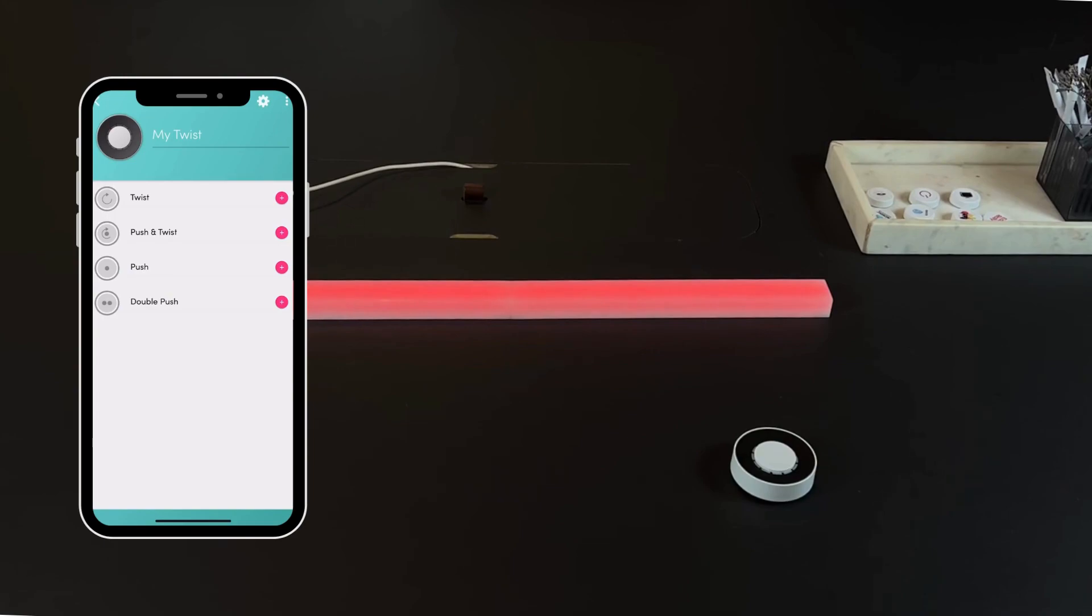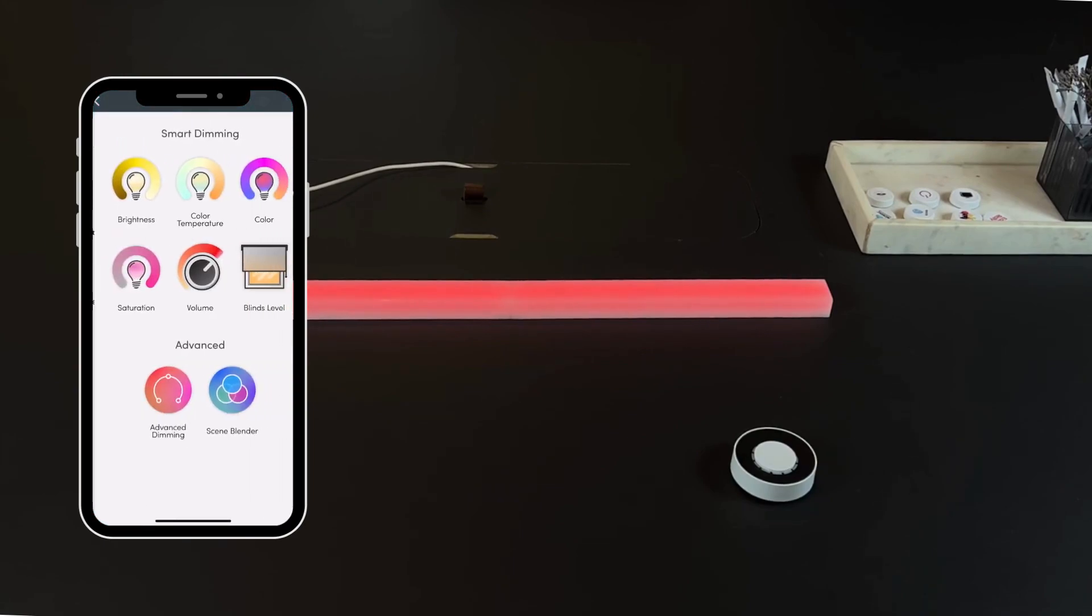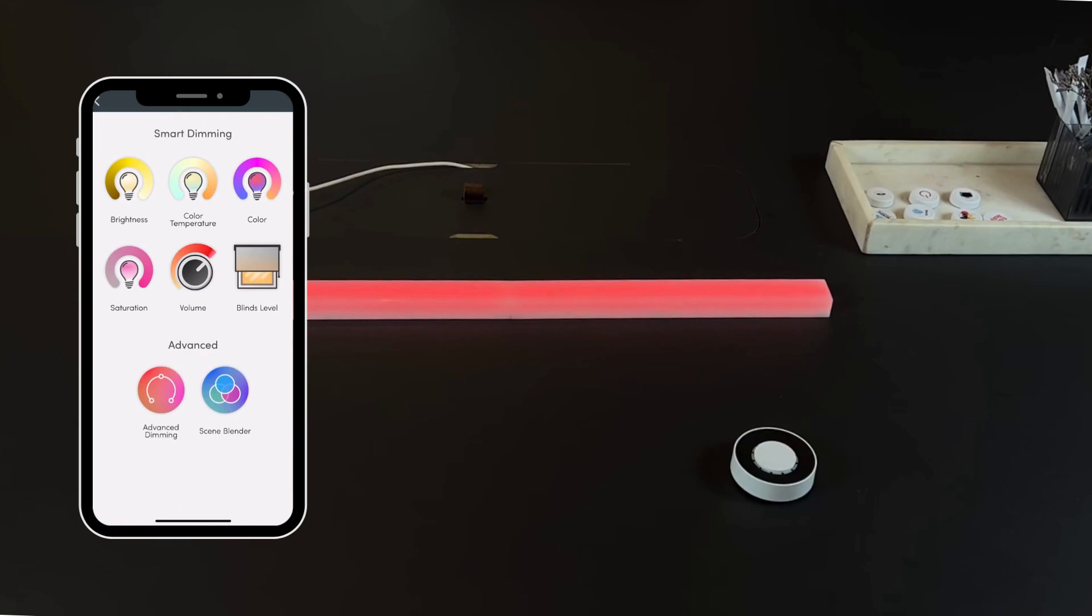Select the trigger of your choice by pressing the plus symbol. To control your LIFX Lights, you can choose between Smart and the Advanced Dimming option when choosing the Twist and Push and Twist triggers.